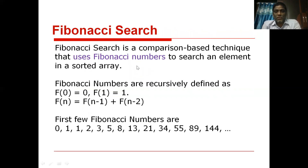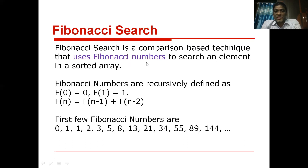Now let us begin our Fibonacci search. Fibonacci search is an extension of binary search, therefore it follows the same rules for dividing the list into sublists. The difference is that binary search divides the list into two equal halves, whereas Fibonacci search divides the list into unequal subarrays based on Fibonacci numbers. Fibonacci search also follows the divide and conquer methodology.